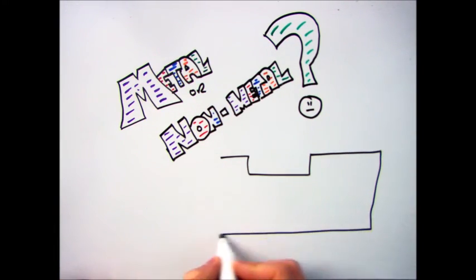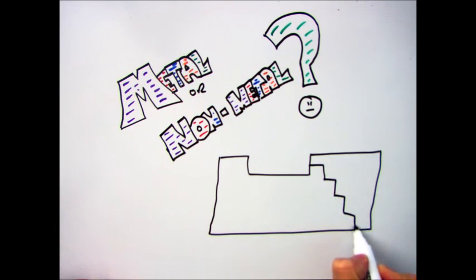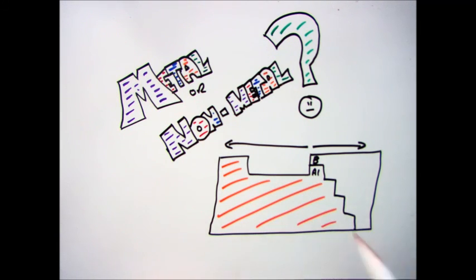Now the first key thing when you draw your periodic table or see your periodic table in an exam is to draw this zigzag that I'm drawing here. So it's a cross in between aluminium and boron, cross down like a stairway.